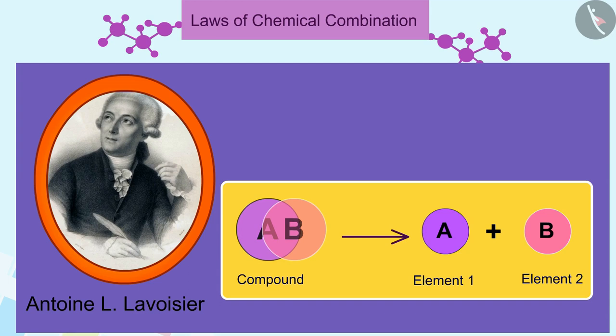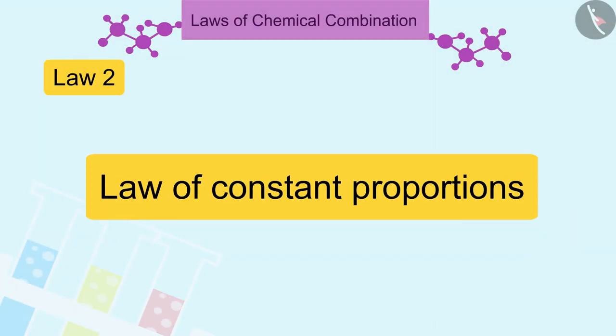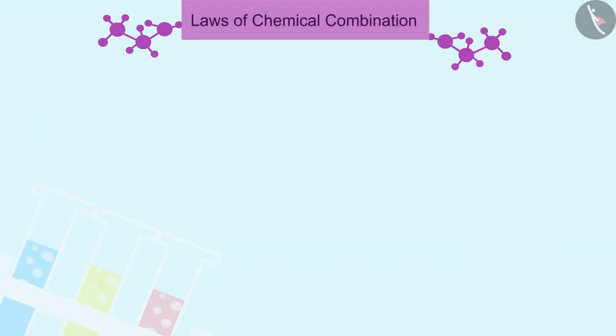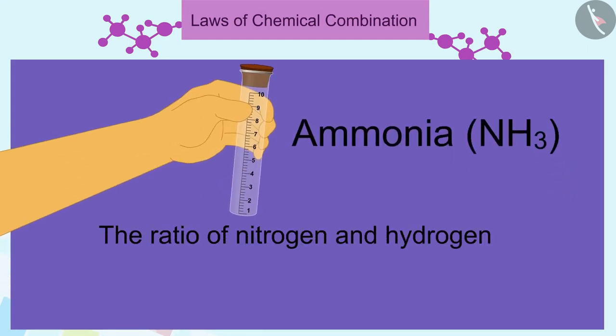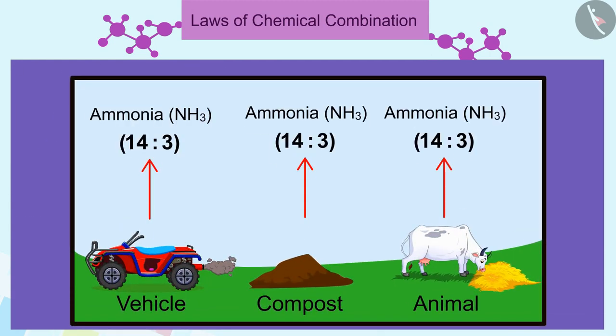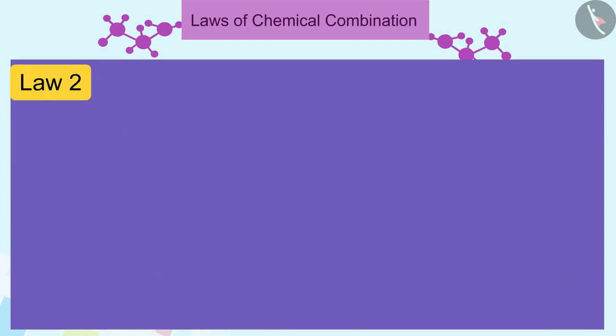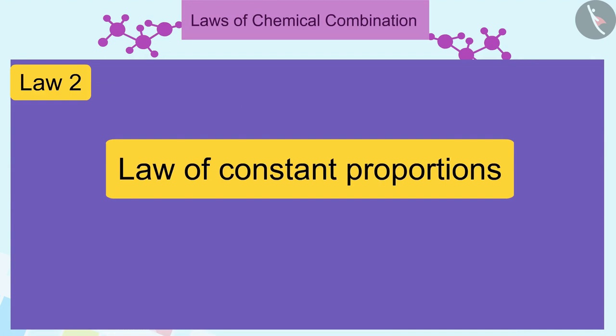Let us take another example of this. If we take the example of ammonia, nitrogen and hydrogen are always present in the ratio 14 is to 3 by mass, whatever the method or the source from which it is obtained. These examples explain the law of constant proportions,